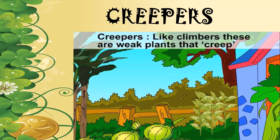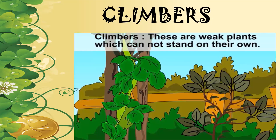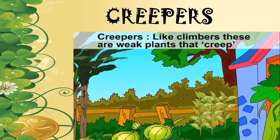Creepers, like climbers, are weak plants that creep and do not stand tall. The difference between creepers and climbers is this: as the word suggests, climbers go tall and move in an upward direction as well as sideways. But creepers grow only on the ground sideways — they take support of other things at ground level and do not move upward while growing.